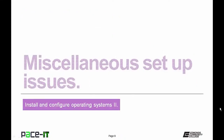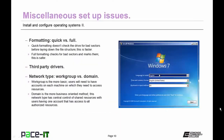Let's talk about miscellaneous setup issues. First, formatting the hard drive — quick format versus full format. In a quick format, the system does not check the hard drive for bad sectors before laying down the file structure, so it's faster. The full format does check for bad sectors and marks them so files aren't placed there — it's slower but much safer.